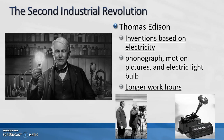The first industrial revolution took place in Great Britain with the introduction of the steam engine and the factory. We then see a second industrial revolution during which many important inventions are created. Thomas Edison is credited with many innovations including the phonograph, motion pictures, and the electric light bulb. His inventions, based on electricity, resulted in longer work hours in factories since they no longer had to rely on sunlight.